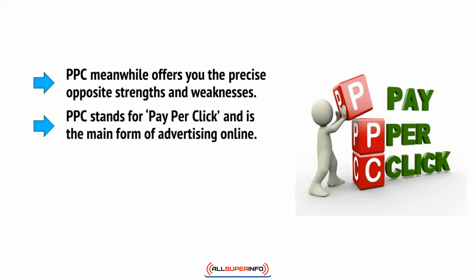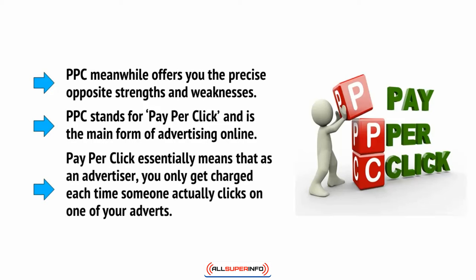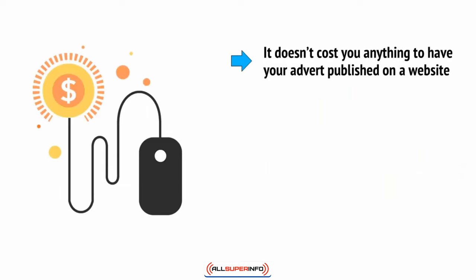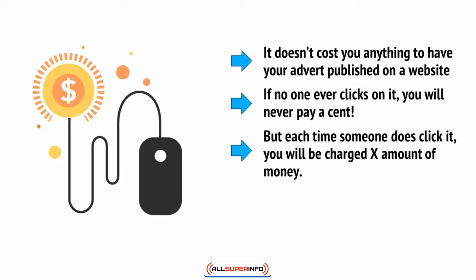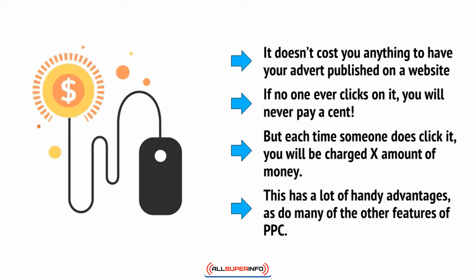PPC stands for pay-per-click and is the main form of advertising online. Pay-per-click essentially means that as an advertiser, you only get charged each time somebody actually clicks on one of your adverts. So in other words, it doesn't cost you anything to have your advert published on a website. If no one ever clicks on it, you'll never pay a cent. But each time someone does click on it, you'll be charged X amount of money. This has a lot of handy advantages, as do many of the other features of PPC.